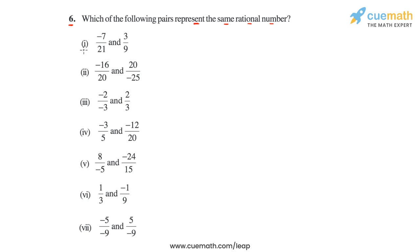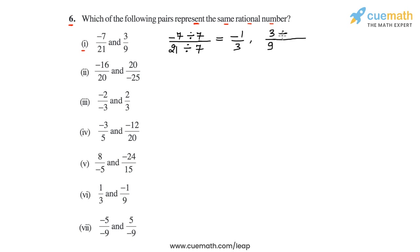In part 1, we have the pair -7/21 and 3/9. Reducing -7/21 to standard form: the HCF of 7 and 21 is 7, so dividing numerator and denominator by 7 gives -1/3. For 3/9, the HCF is 3, so dividing by 3 gives 1/3. Since -1/3 ≠ 1/3, these two do not represent the same rational number. The answer is no for part 1.